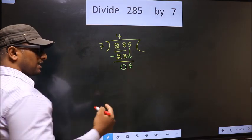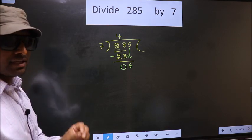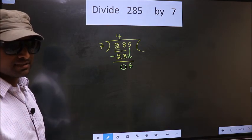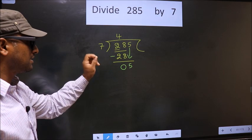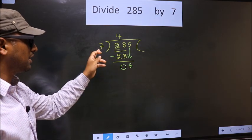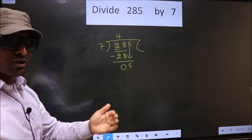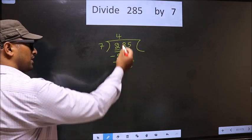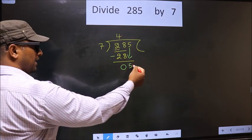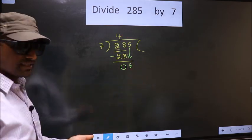This is where the mistake happens. And the mistake is this. Here we have 5, here 7. 5 smaller than 7. So what many do is, they put a dot and take 0 here, which is wrong.